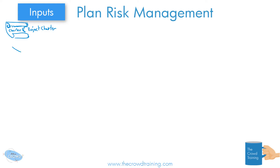The other input would be all the other plans. If we're going to try to plan out what could go right or could go wrong in our project, we have to know the rest of the project management plan — things like the schedule management plan, the resource plans (physical resources), whether anything could go wrong with equipment or the humans we're employing. Could there be conflicts? All the different plans in our project management plan are definitely an input.